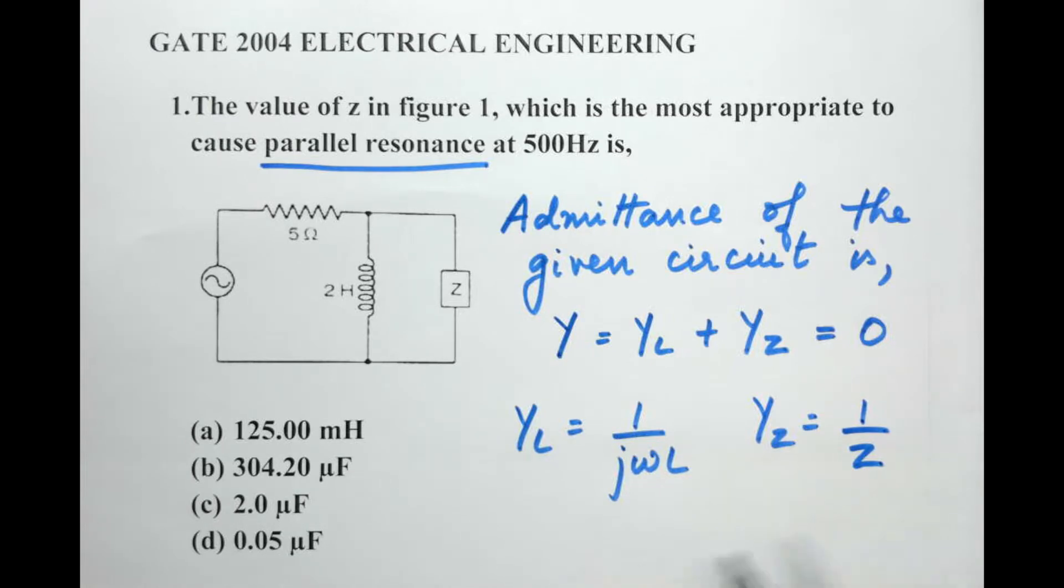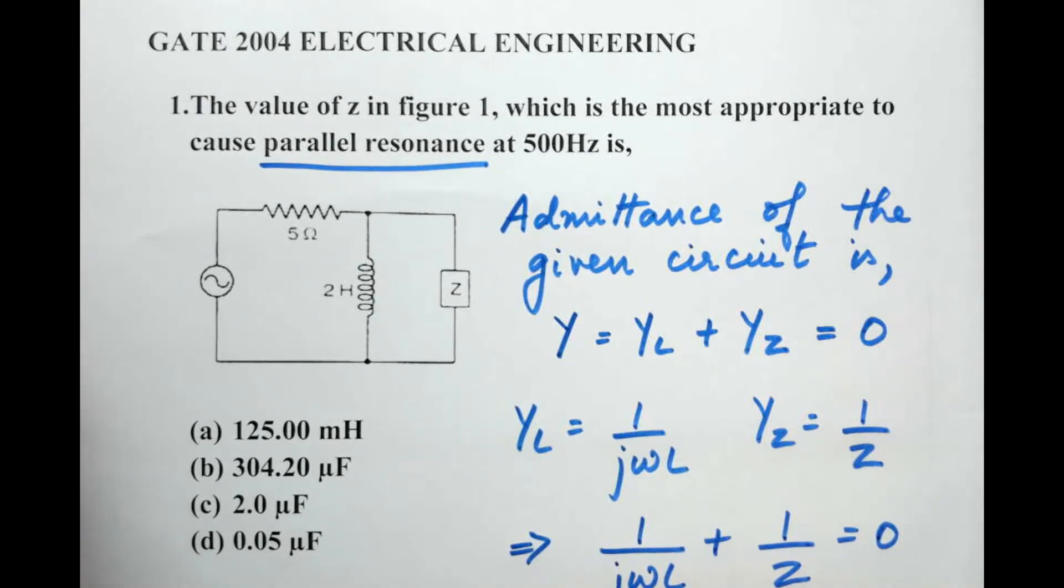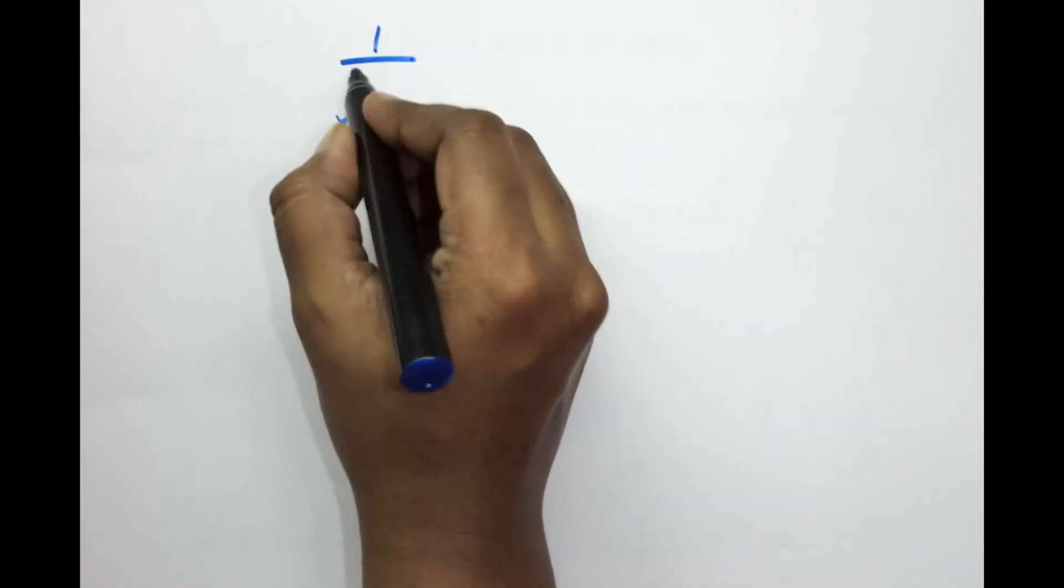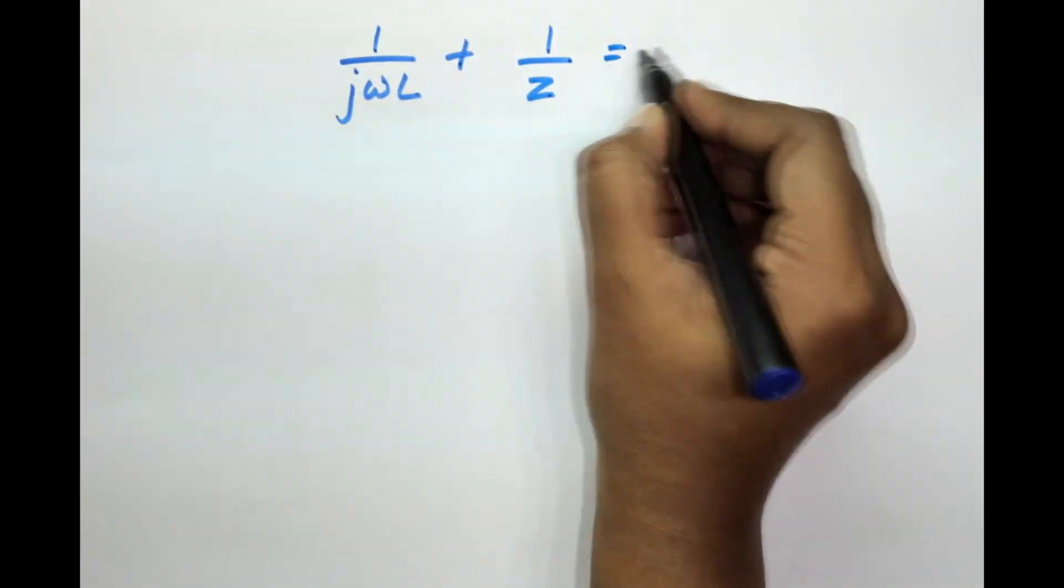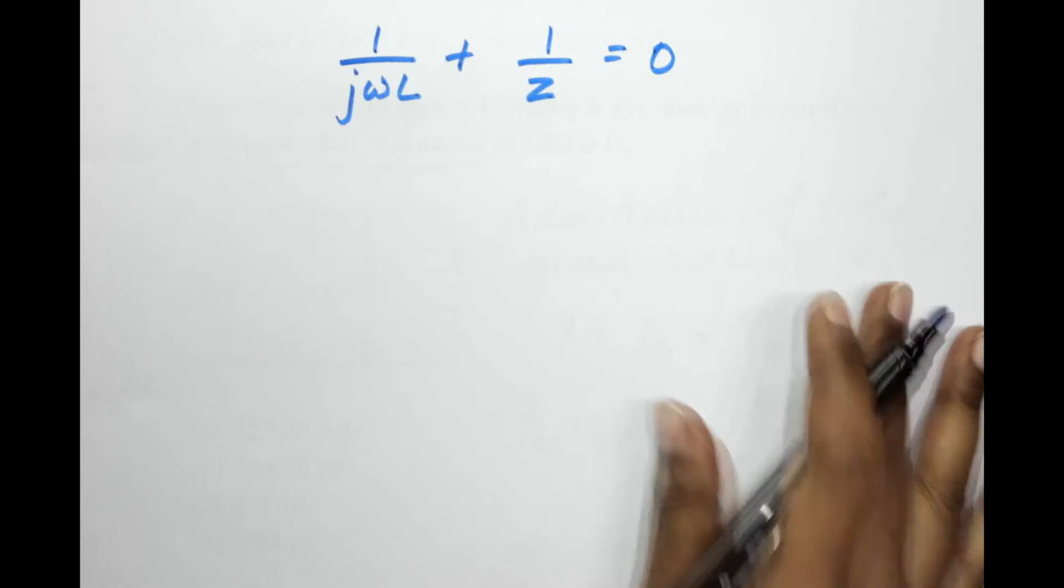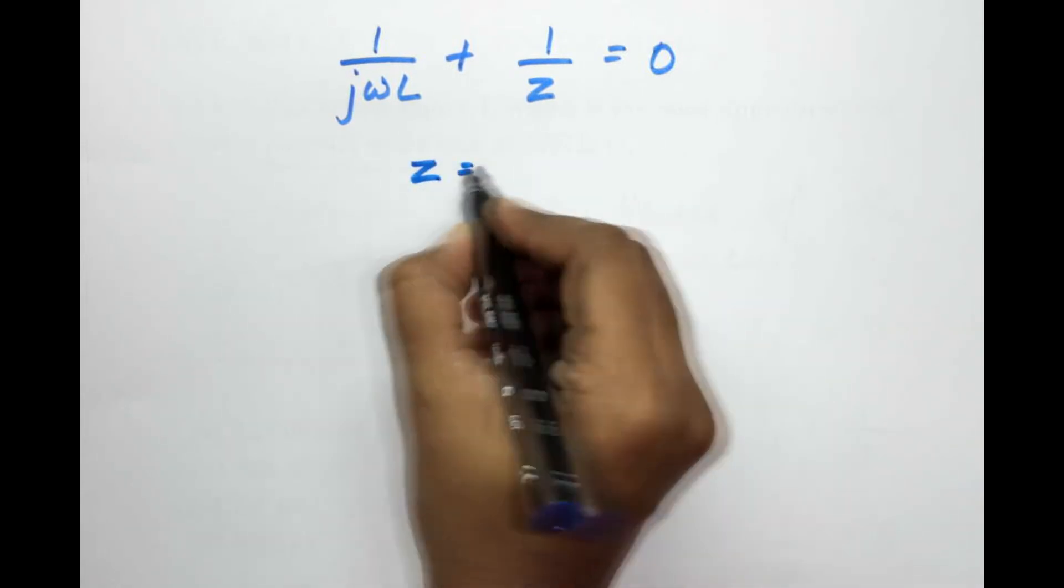Now for this equation here if we solve for Z we will get a certain expression. So let me write that down here. The expression so far: 1 by jωL plus 1 by Z is equal to 0. Now if we solve for Z we will obtain an expression of Z equals to ωL by j.